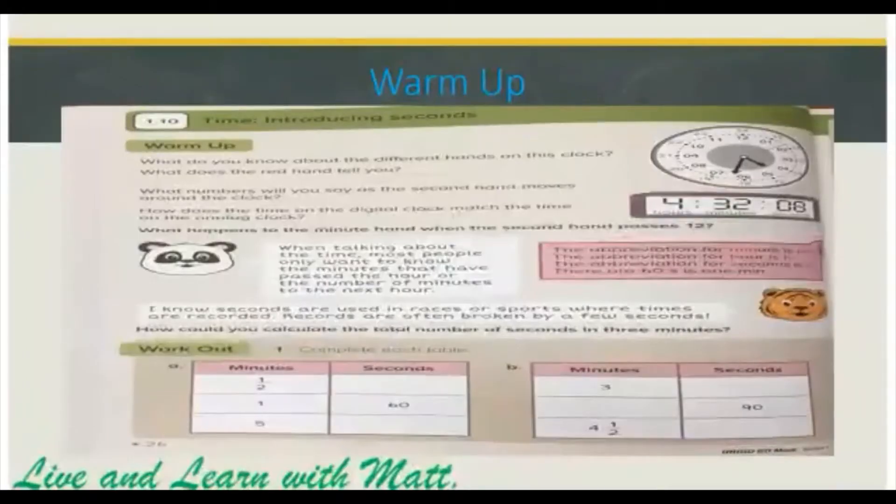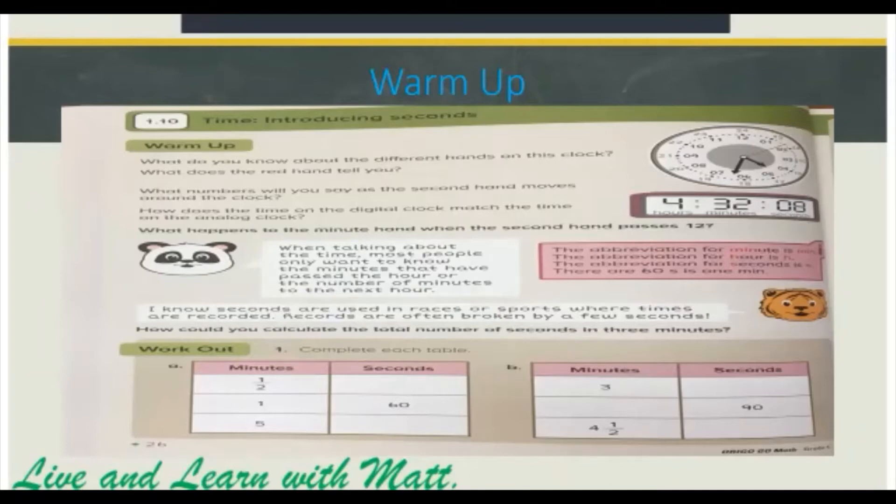Let's take a look at this analog clock. What do you know about the different hands on this clock? This red hand is the seconds hand, it counts the seconds. So what numbers would you say as the seconds hand moves around the clock? Well, as the seconds hand moves around the clock, we only talk about the numbers of the hours and the minutes.